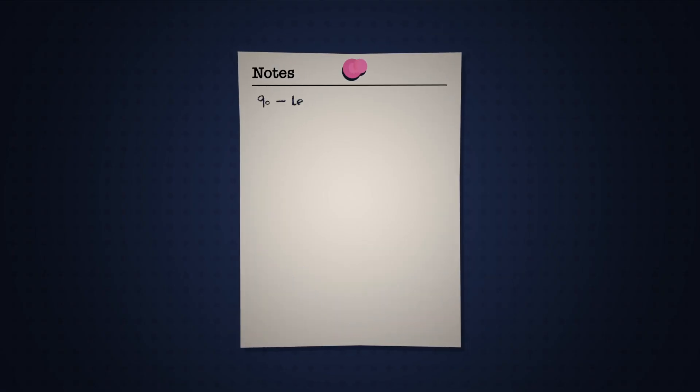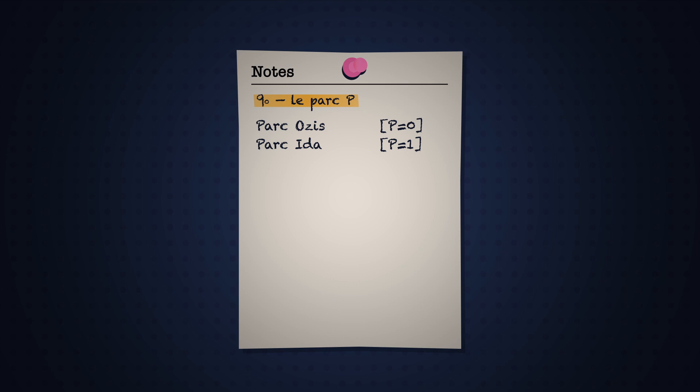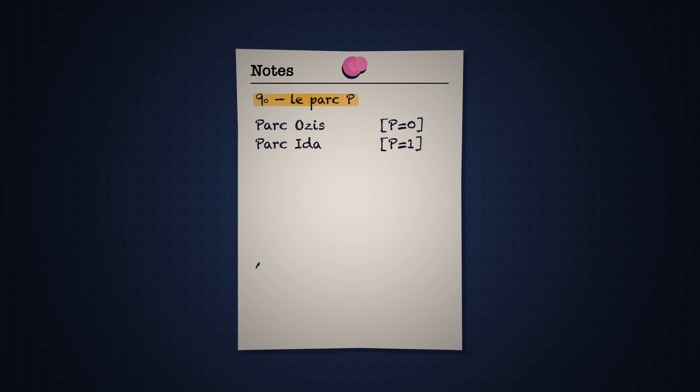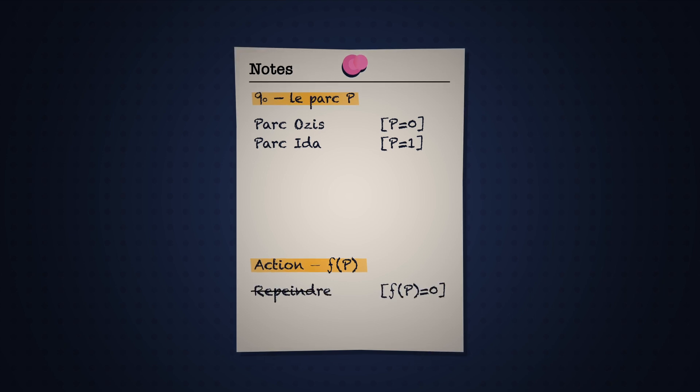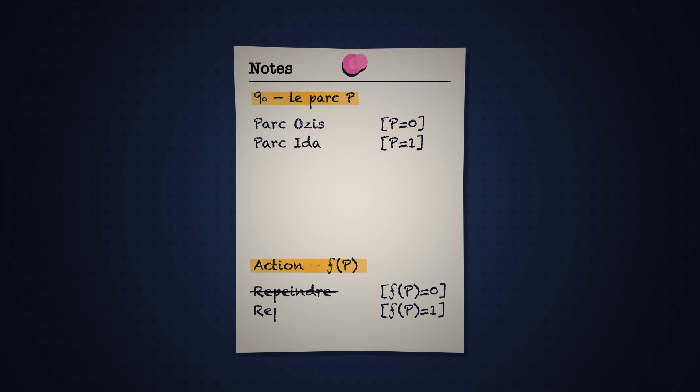Tout au long de cet algorithme, nous identifions le parc Osis par 0 et le parc Ida par 1. Les deux vandales utilisent une fonction qui leur est propre pour déterminer s'ils doivent repeindre la statue d'un parc donné. Lorsque cette fonction renvoie 0, la statue du parc visé n'est pas repeinte. Si elle renvoie 1, la statue est repeinte dans sa couleur opposée.